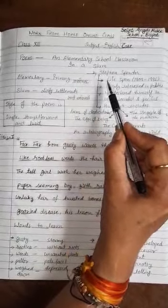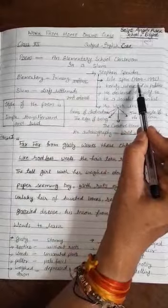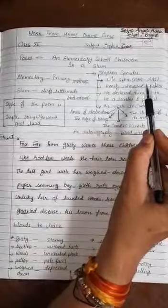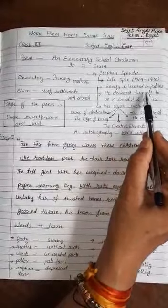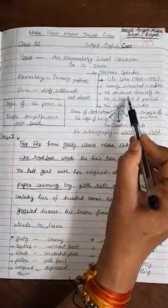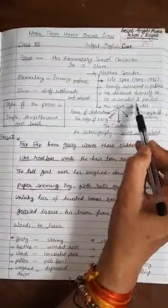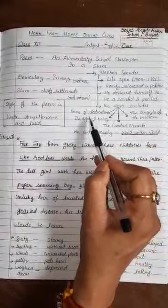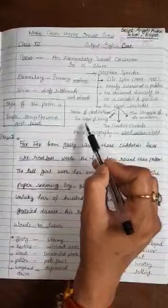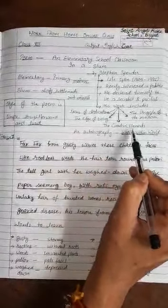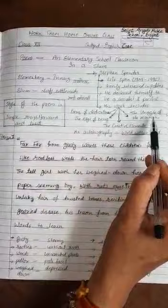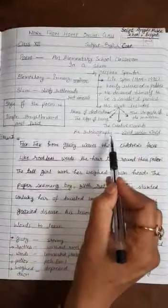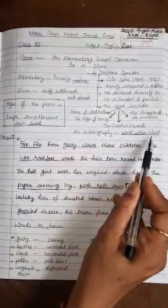First of all, know about the poet. Stephen Spender's lifespan is 1909 to 1995. He was keenly interested in politics but he declared himself to be a socialist and a pacifist. His work includes a number of books such as Poems of Dedication, The Age of Being, The Creative Elements, The Struggle of the Modern.